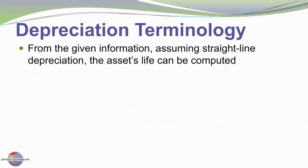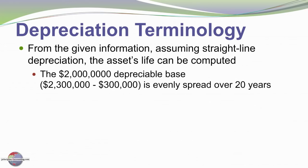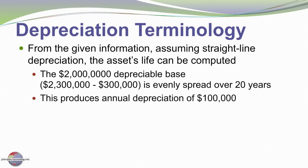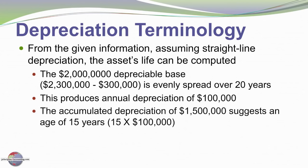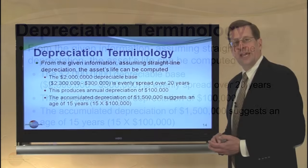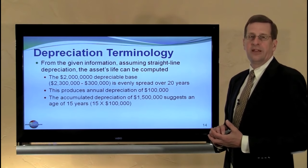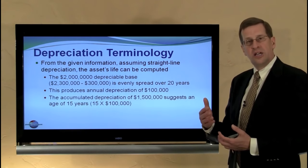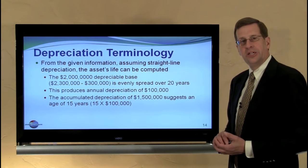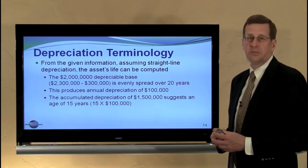As we close this example, can you determine how old the asset is at this balance sheet date? We had a $2,300,000 asset with $300,000 of salvage value, giving a $2,000,000 depreciable base over a 20-year service life — so annual straight-line depreciation is $100,000 per year. With accumulated depreciation of $1,500,000, that's $100,000 per year for 15 years, meaning the asset is 15 years old. You can actually glean this type of information from the balance sheet to get a good estimation of how old a business's assets are.